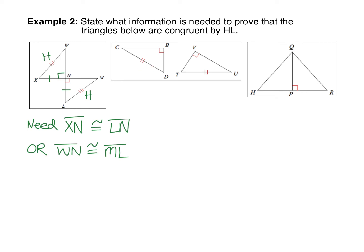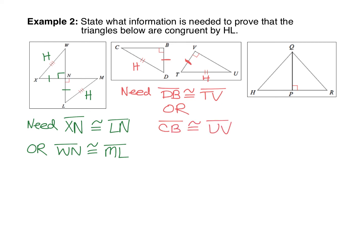The next set of triangles also has the hypotenuses marked, so we need the legs — you can pick either pair. For the shorter leg, that would be DB congruent to TV. Or for the longer leg: CB congruent to UV. Notice when naming these, go in the same direction — B is the 90-degree vertex in the first triangle, so the corresponding vertex is V in the second. So DB corresponds to TV, and CB corresponds to UV.